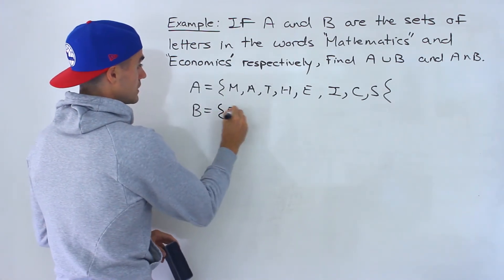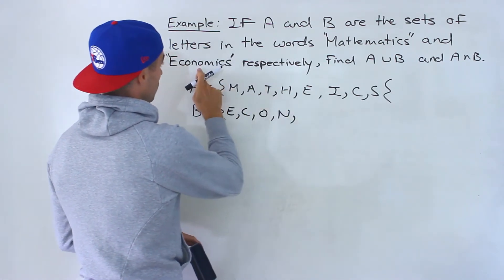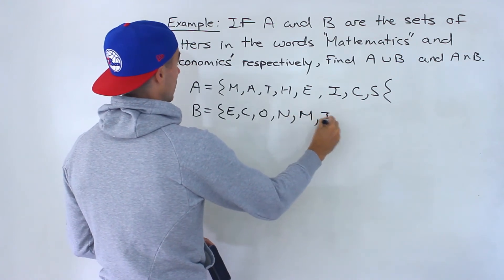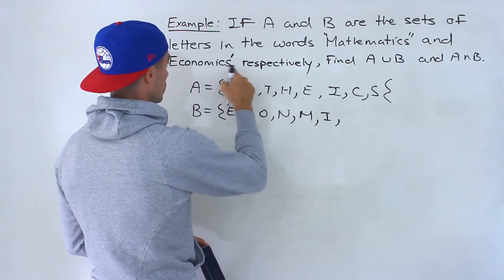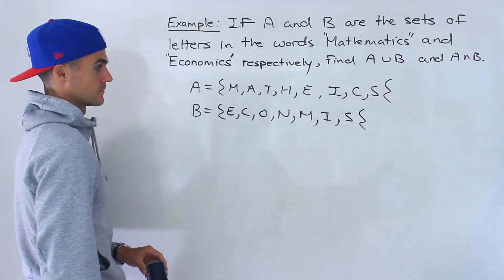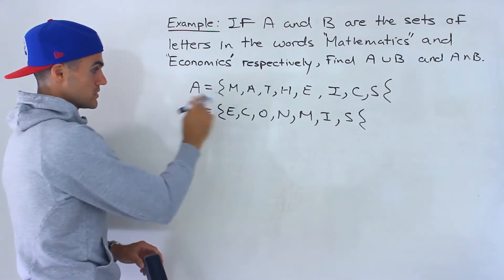And then if we do the same thing for B we'll have E C O N, O we already wrote, M we haven't wrote, I, C we wrote, S we haven't wrote. So this is A and this is B.